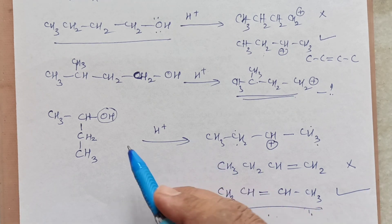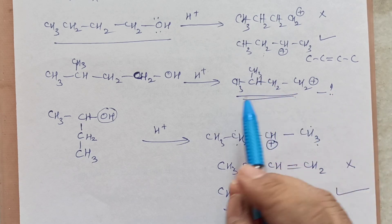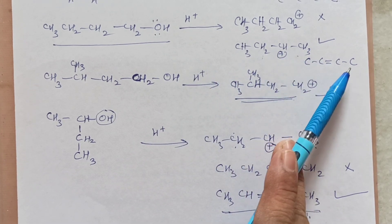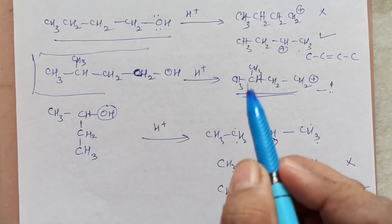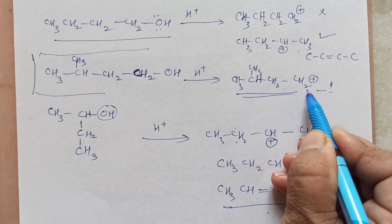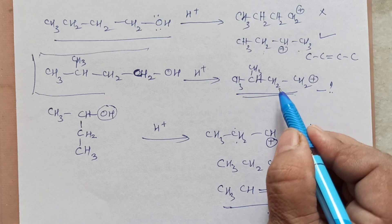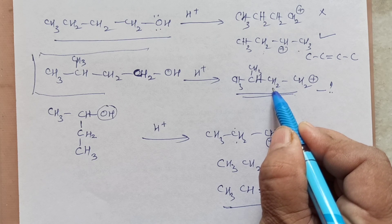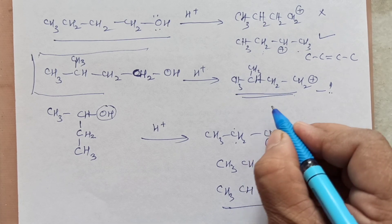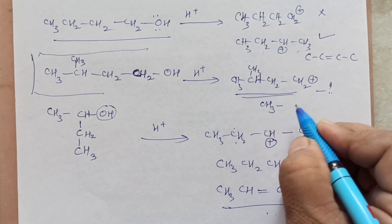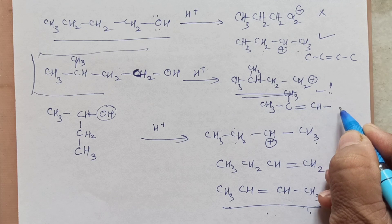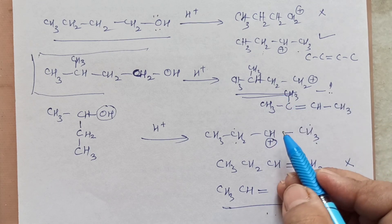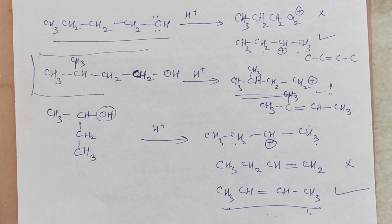This alcohol also has an H here. After carrying out the reaction in acid medium: first this leaves, giving a primary carbocation. There is a possibility of H migration (hydride shift) from the neighboring carbon, forming a more stable carbocation. When that H migrates, the positive charge shifts. Then elimination gives CH3 with a double bond and CH3 on the other side — that is the product for this alcohol.